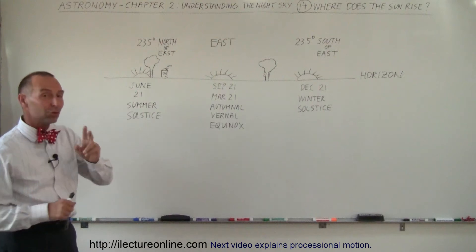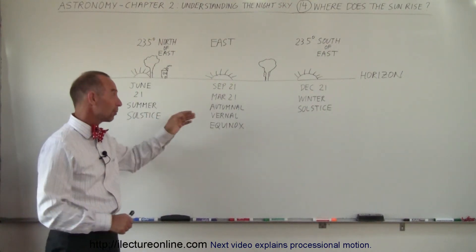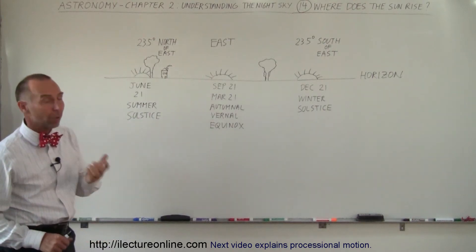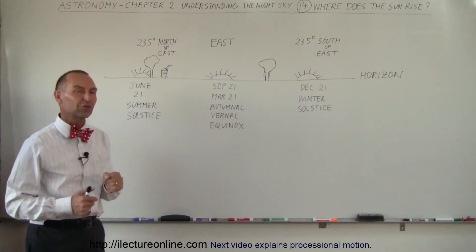It only rises in the east on two days out of the year, September 21st and March 21st. September 21st is the autumnal equinox, and March 21st is the vernal equinox, the first day of fall and the first day of spring.